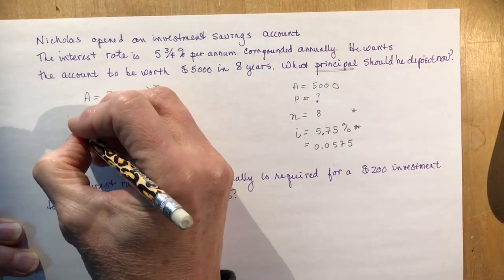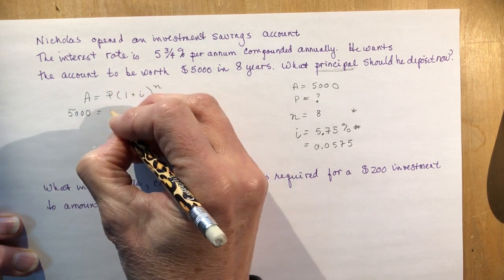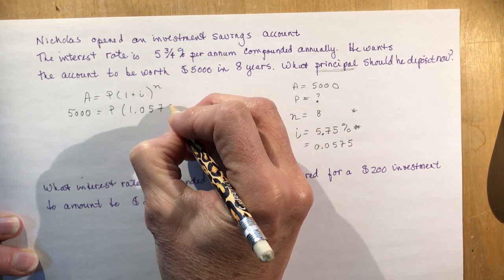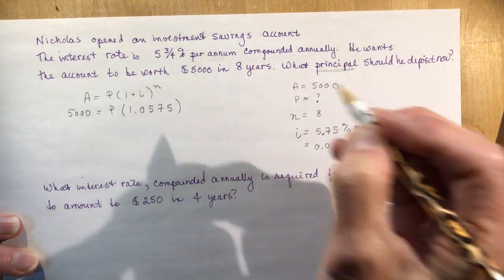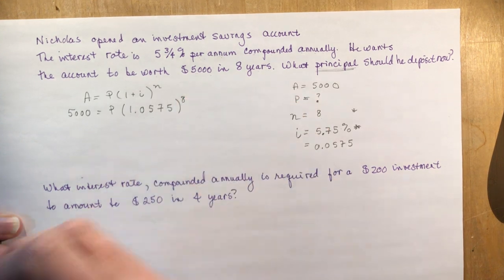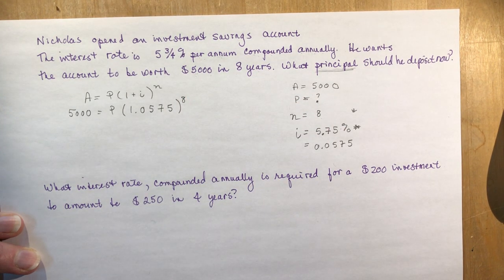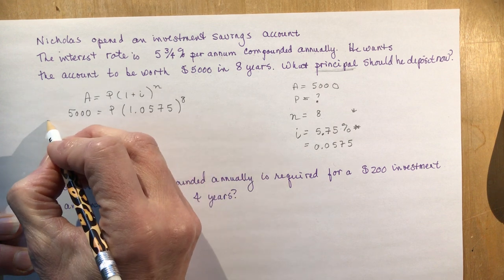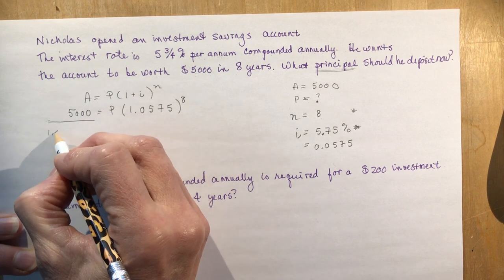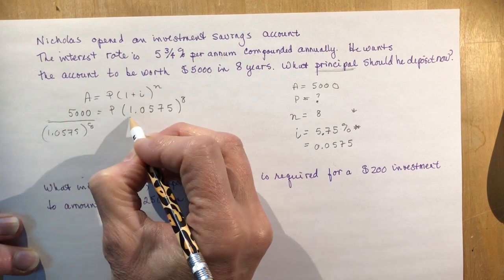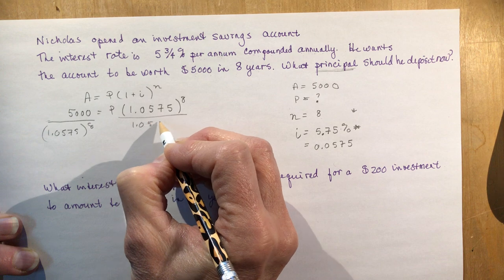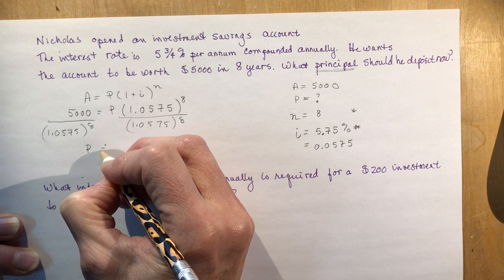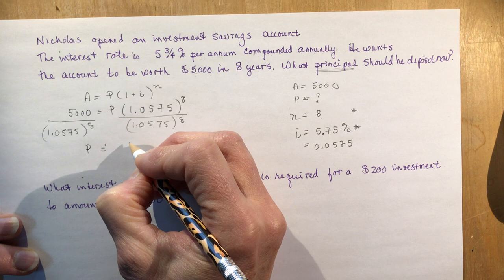The key is to make sure the compounding period and the interest period match, adjusting if they differ. So I put 5,000 here — that's how much money he wants to have. I'm solving for P, with 1.0575 raised to the power of 8. You need a calculator to solve for P: divide 5,000 by (1.0575 to the power of 8) on both sides, keeping things balanced. P comes out to approximately $3,196.88.